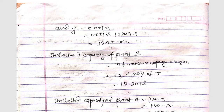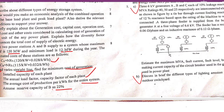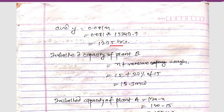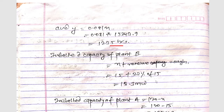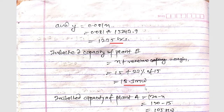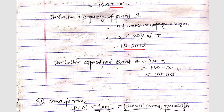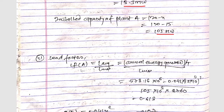The installed capacity of plant B equals X plus the reserve margin. Since reserve capacity is 22%, installed capacity of B = 15 + 22% of 15 = 18.13 megawatt. The installed capacity of plant A = 120 − X = 120 − 15 = 105 megawatt.